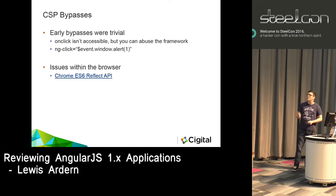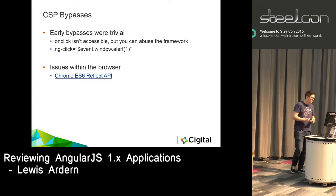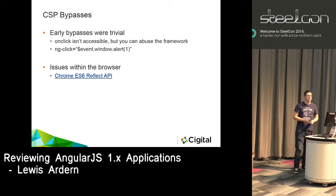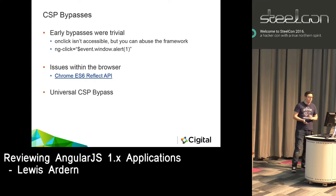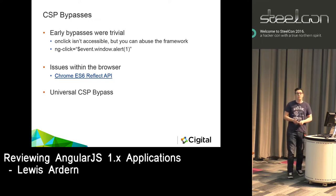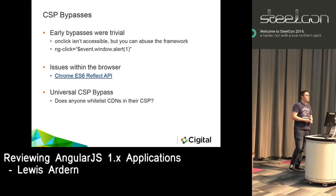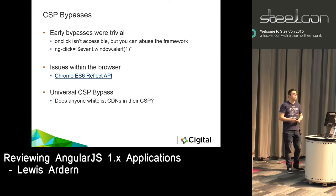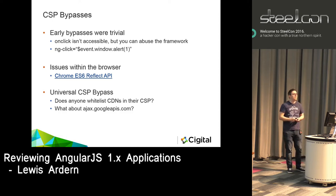There are also issues within the browser itself - there's a great presentation about abusing the ES6 Reflect API in Chrome using a blob object that reflects back without CSP headers, giving you cross-site scripting. But again, it doesn't even matter because there's a universal CSP bypass within Angular. The question is: does anyone whitelist CDNs in their CSP, specifically the AJAX Google APIs CDN?